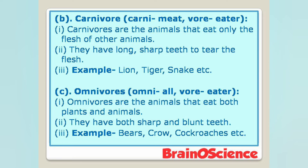C. Omnivores — 'omni' means all, 'vore' means eater. Point 1: Omnivores are the animals that eat both plants and animals. Point 2: They have both sharp and blunt teeth. Examples: bear, crow, cockroaches, etc.